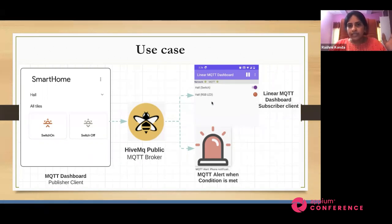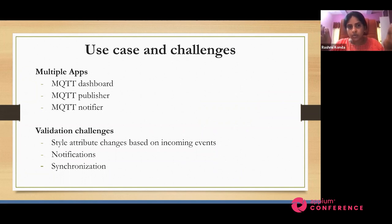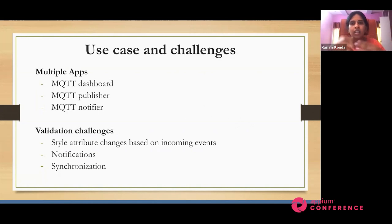We wanted to automate this entire workflow and found a few challenges when we chose a single driver. We have three different apps: one is a dashboard app where the LED glows, one is the publisher which simulates the sensor data or payload, and the notifier which generates the notification alert. Switching between apps is possible using UI Automator 2. However, validating style attributes — the bulb, switch colors, and similar things — is not possible using UI Automator, so we have to go for Espresso.